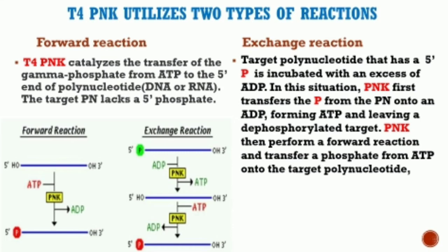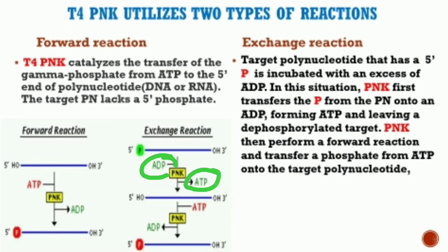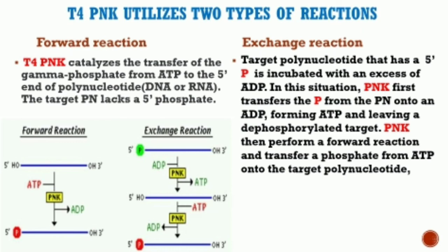Polynucleotide kinase utilizes two types of reactions: forward reactions and exchange reactions. In the forward reaction, polynucleotide kinase transfers the gamma phosphate from ATP to the 5' end of a polynucleotide — DNA or RNA — where the target polynucleotide lacks a 5' phosphate. In the exchange reaction, a target polynucleotide that has a 5' phosphate is incubated with an excess of ADP. Polynucleotide kinase first transfers the phosphate from the polynucleotide onto an ADP molecule, forming ATP and leaving a dephosphorylated target polynucleotide. The kinase then performs a forward reaction, transferring a phosphate from ATP onto the target polynucleotide. In this way, we can exchange the already-present phosphate end group with a radiolabeled phosphate group.